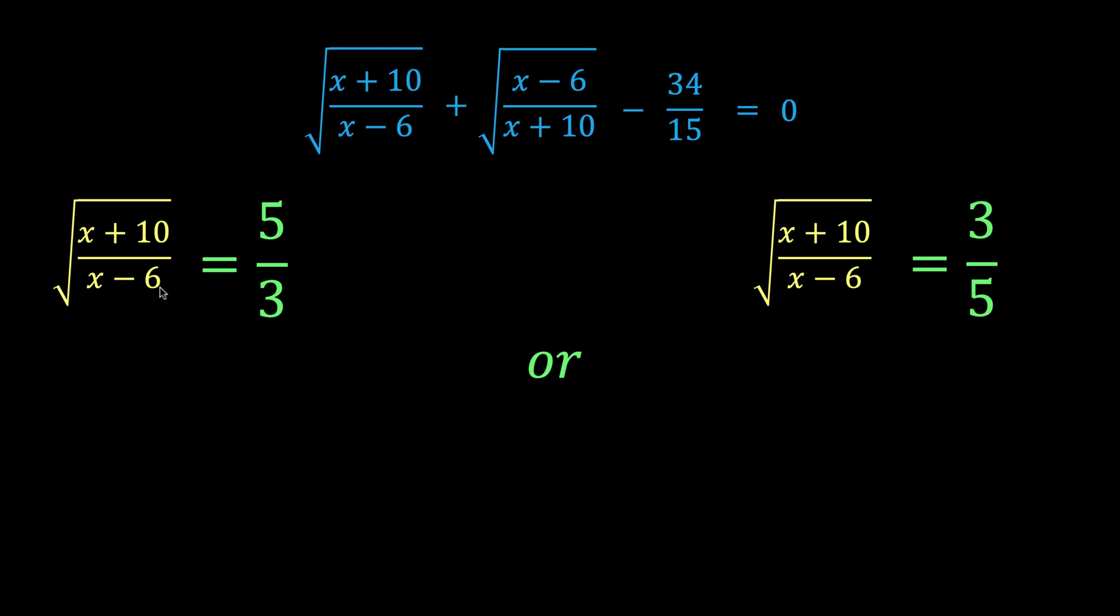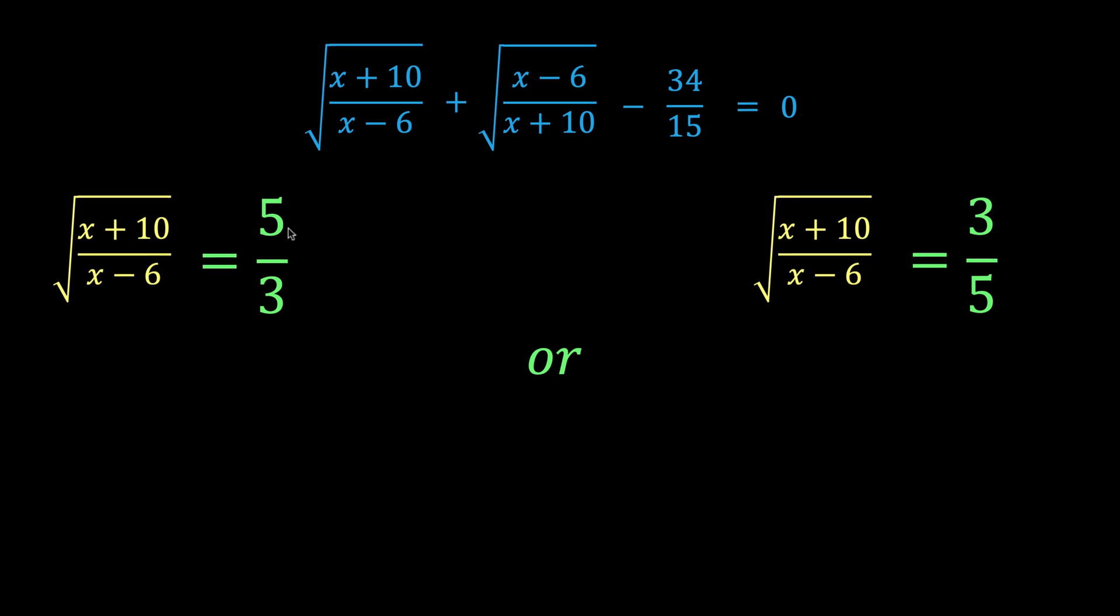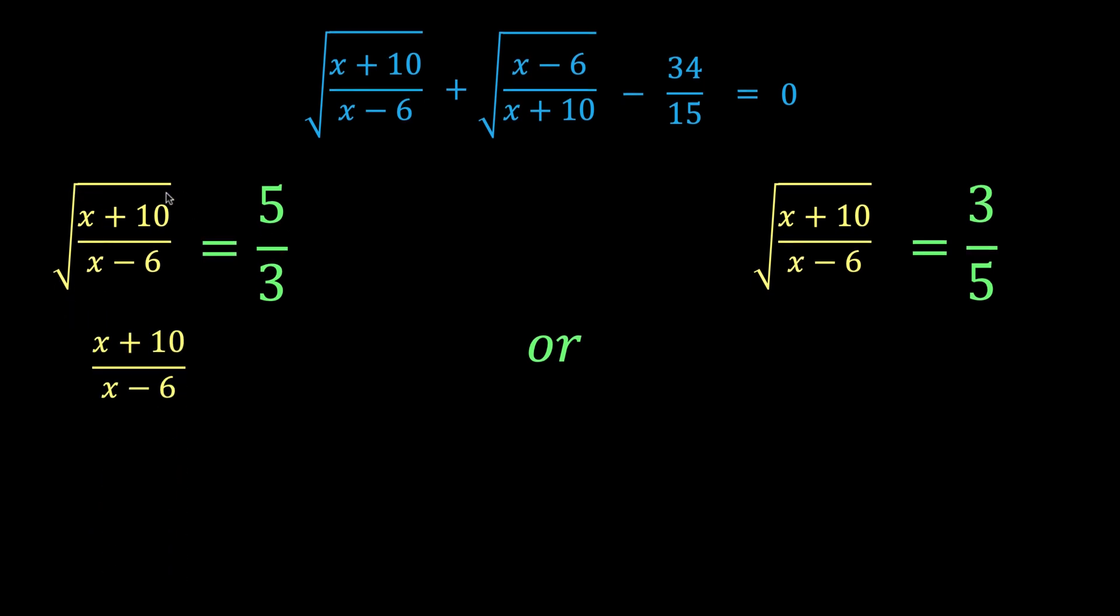So, solving this first equation, we square both sides of this equation to arrive at this. The square of the square root is basically whatever is the expression inside the radical. And the square of 5 over 3 is 25 over 9. We can simplify this further by multiplying by the LCD, but mentally we can achieve that by cross multiplication. So, 9 times x is 9x, 9 times 10 is 90, 25 times x is 25x, 25 times negative 6 is negative 150. And gathering similar terms and solving for x, we have x equals 15.